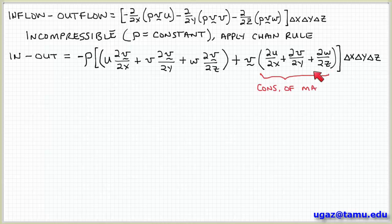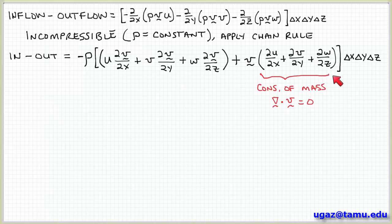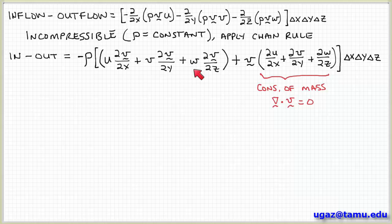Notice that this second term may look familiar. When we discussed conservation of mass, this was exactly what we obtained for the continuity equation for incompressible flow. Another way to express that in vector form is del dot v equals zero. So for an incompressible fluid, this second group of terms vanishes, and the expression for momentum inflow and outflow simplifies.